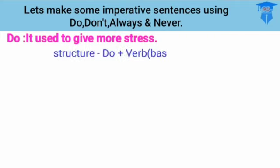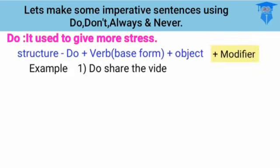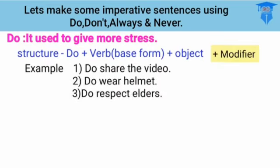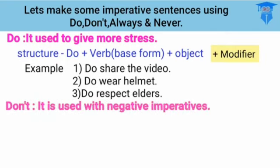We can make imperative sentences by using 'do,' 'don't,' 'always,' and 'never' — jadi kita bisa menggunakan kata-kata itu sebelum kata kerja. 'Do' is used to give more stress — harus benar-benar dilakukan. The formula is: do + verb one + object. For example: 'Do share the video,' 'Do wear a helmet,' 'Do respect elders.'